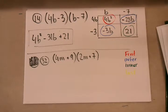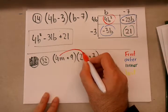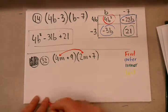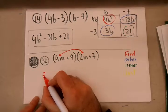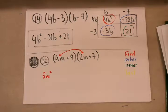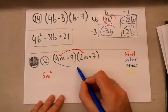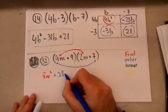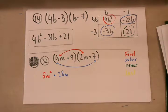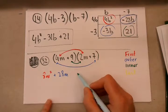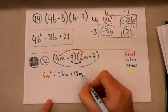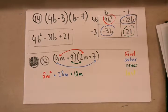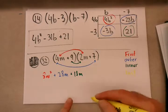So I multiply my first monomials first: 4m and 2m, which gives me 8m squared. Then my outer monomials: 4m and 7, which gives me positive 28m. Then my inner monomials: positive 9 and 2m, which gives me positive 18m. And last but not least, my last monomials: 9 and 7, which gives me positive 63.